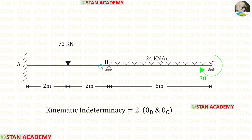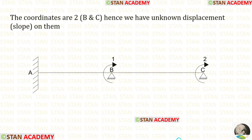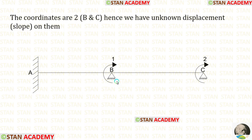In this beam, points B and C have hinged supports, so there will be slope at these points. Therefore, the kinematic indeterminacy of the beam is 2: theta B at point B and theta C at point C. Now let us make the coordinates diagram. We have two coordinates, at points B and C, since these are the only points with slope. The coordinates are made in the clockwise direction.